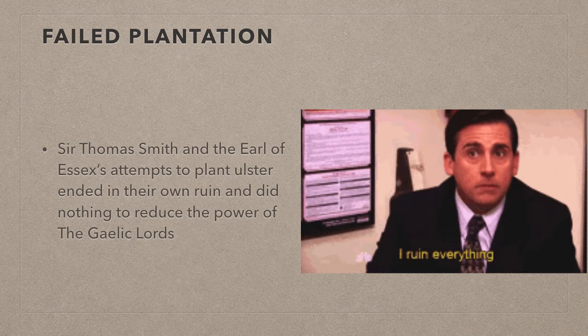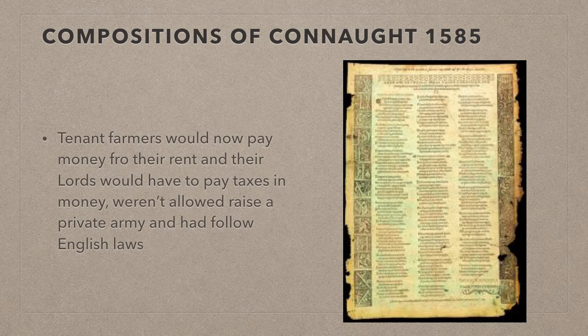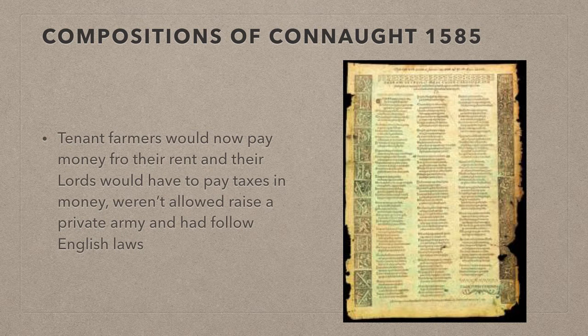The English were ready to try again in the late 1580s after dealing with the Munster rebellion. They first implemented a new policy in Connacht known as the Compositions of Connacht in 1585. In the Composition of Connacht, tenant farmers would now pay money for their rent to their lords instead of services, who would in turn pay taxes to the English Crown and follow English laws instead of being able to raise their own forces from their lands. These great landlords could no longer be independent warlords.